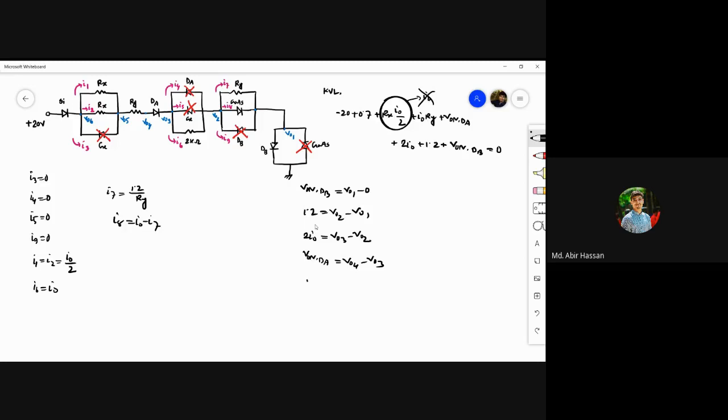And i0 times Ry equals V05 minus V04. Finally, you can calculate V06.